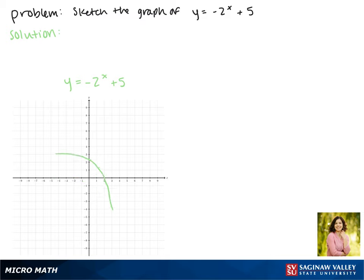So we'll move our graph up five places, and notice that now it passes through the point. The asymptote shifted up as well, making it the line y equals 5. This is the graph of our function.